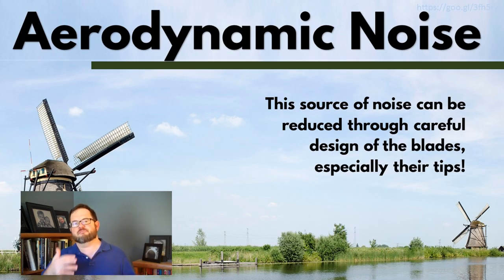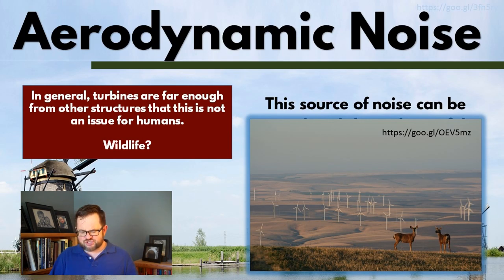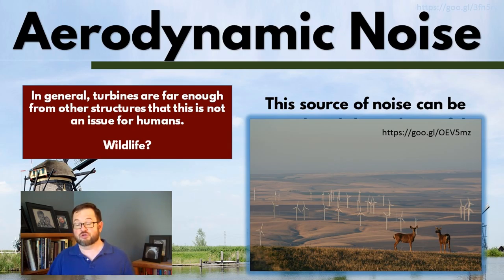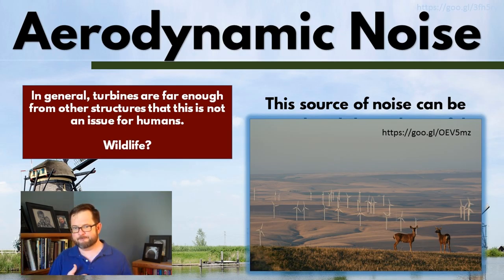Finding the right balance between reducing noise but still maintaining the efficiency of the turbine is important. But it is also the case that, in general, these turbines are placed far enough back from structures like neighborhoods. They're generally in a more rural location — in part for safety reasons, in part for noise reasons, in part for shadow flicker reasons which we're going to hear about in just a little bit — so we don't necessarily need to worry that much about aerodynamic noise from a human perspective. From a wildlife perspective, that gets a lot more complicated fast.